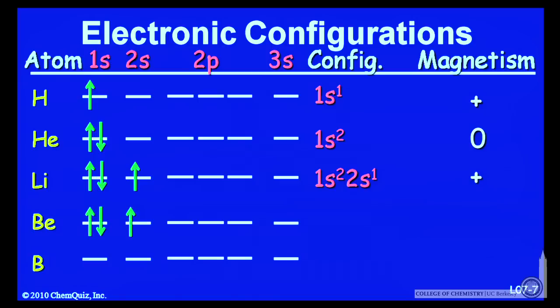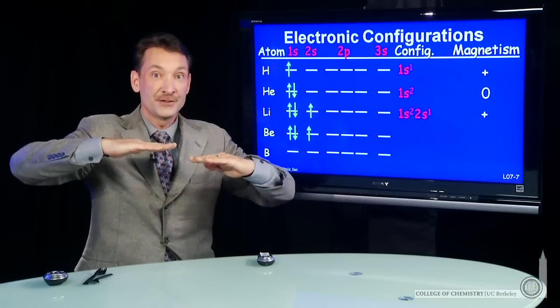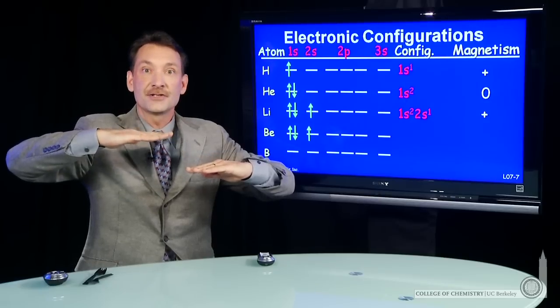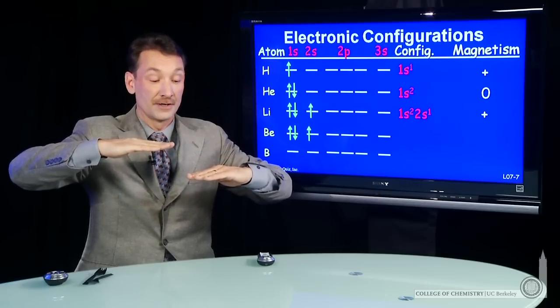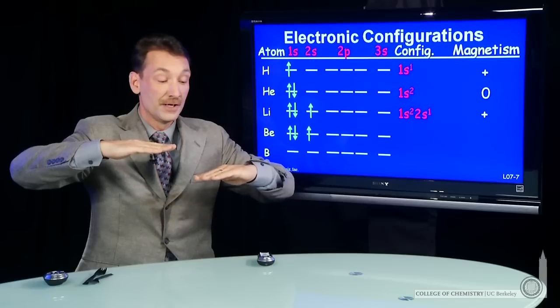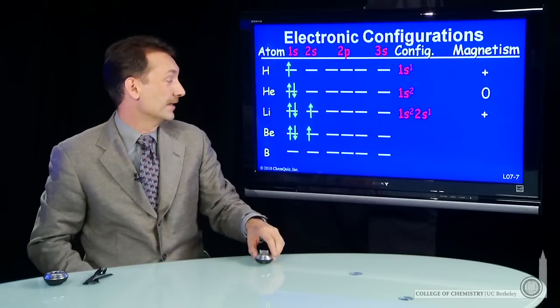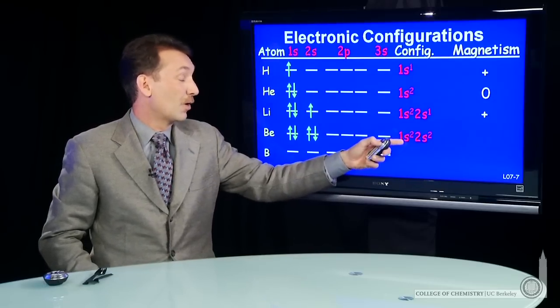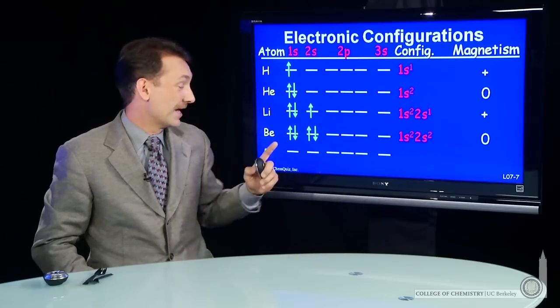Beryllium will pair the 2s. Now it pairs the 2s because the 2p, as you fill the 1s and the 2s orbitals, the 2p starts to get slightly higher in energy because of some shielding effects we'll talk about later. So it's cheaper to put 2s paired than to put an electron in the higher energy 2p. So we're going to have 1s2, 2s2 for beryllium, and that will not be magnetic.